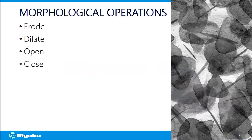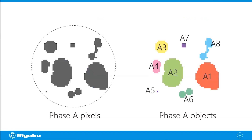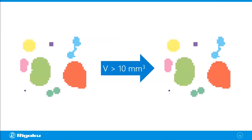Those are some basic operations to optimize or clean up segmentation. Another technique: say you've got pixels labeled as phase A in different groups. You can label them as separate objects — say eight objects belonging to phase A — then check their individual volumes, locations, or surface areas. You can use those parameters to filter out objects you don't want. For example, set a threshold that the volume must be greater than 10 cubic millimeters, and small objects would be filtered out. This is another way to clean up segmentation.